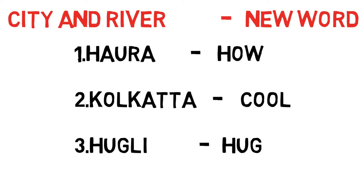Second one — Kolkata. Try to remember Kolkata as 'cool'. The first three letters of Kolkata are K-O-L, and 'cool' also contains the letters O-L. Both words contain the same two letters, so try to remember Kolkata as 'cool'. Third one — Hooghly. Try to remember Hooghly as 'hug'. The first three letters of Hooghly are H-U-G, and its pronunciation is 'hug'. So try to remember Hooghly as 'hug'.